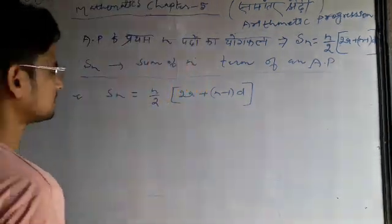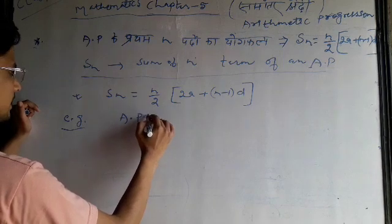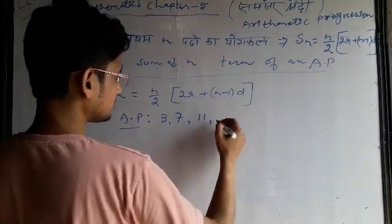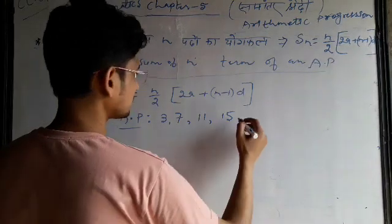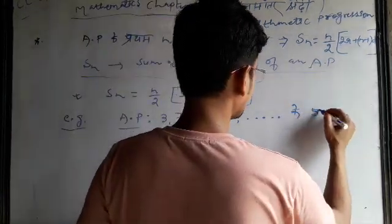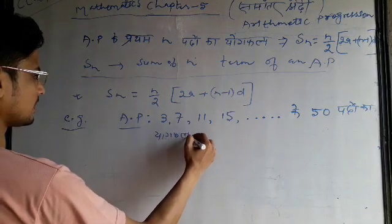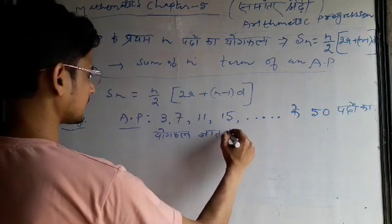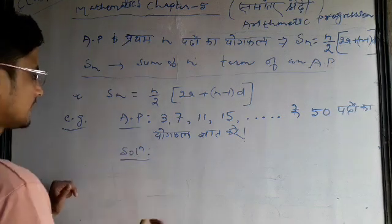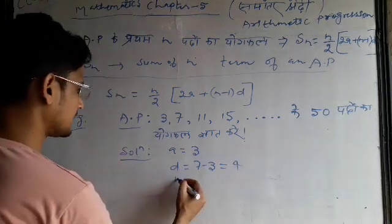Sn is equal to n minus 1, all into d. n minus 3 is equal to 4, n is equal to 50.